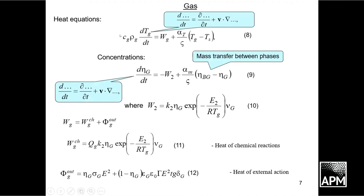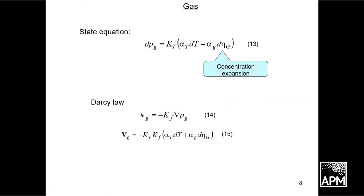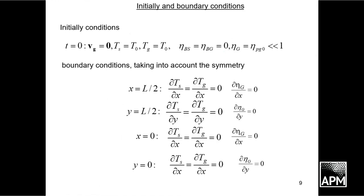In gas, we have heat equations with convective heat transfer and mass transfer between phases, where W2 is heat sources. We have state equation, where alpha G is concentration expansion, and Darcy's law. We have initial conditions and boundary conditions taking into account the symmetry of the tasks.